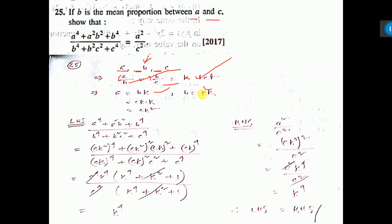This B is equal to CK. Again put here instead of B, that is CK square. So, value of A is CK square and value of B is CK.